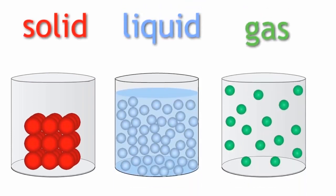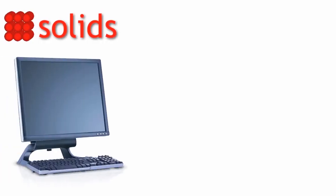The three states of matter are solid, liquid and gas. Let us look at solids. An example of a solid is your computer.